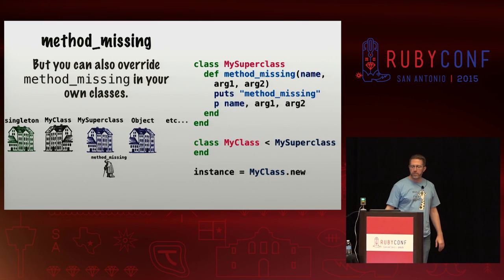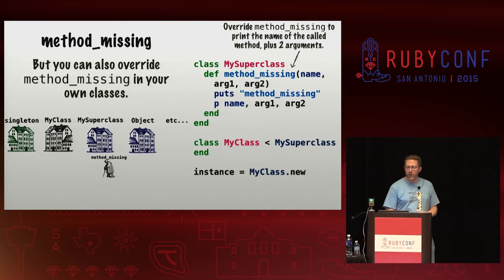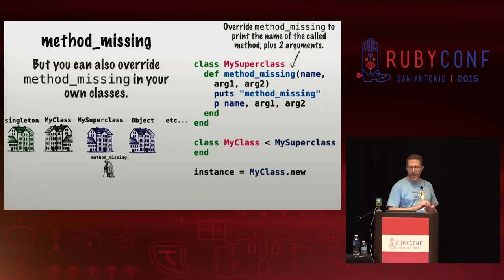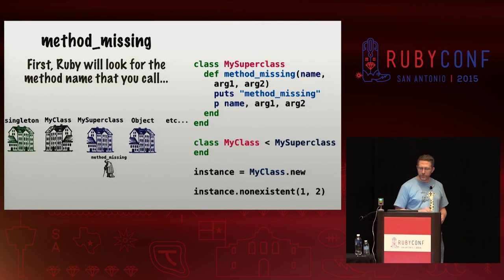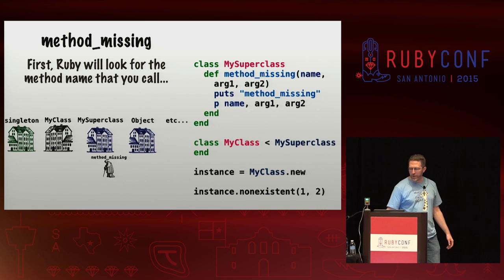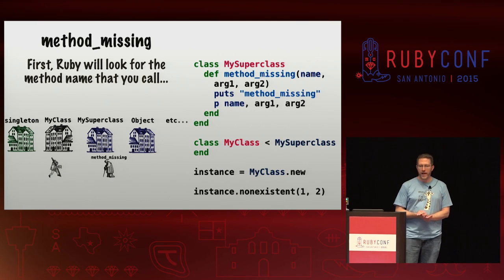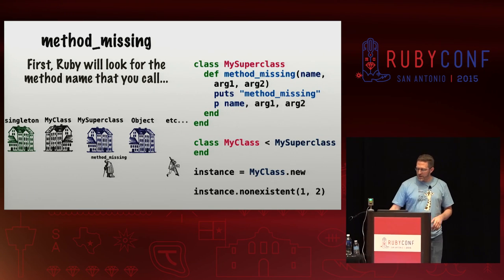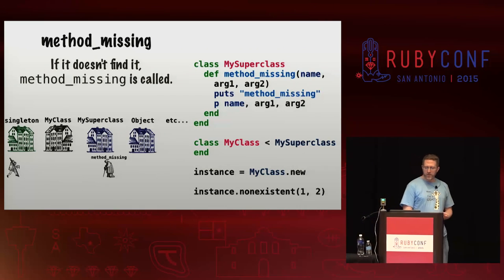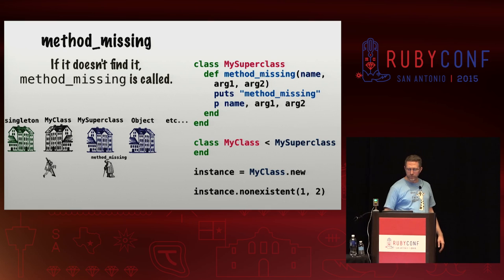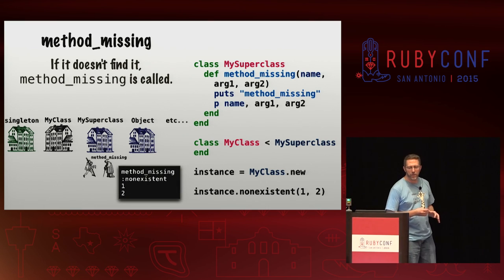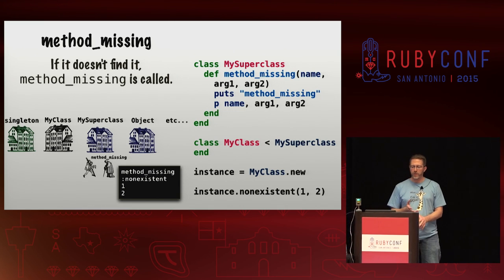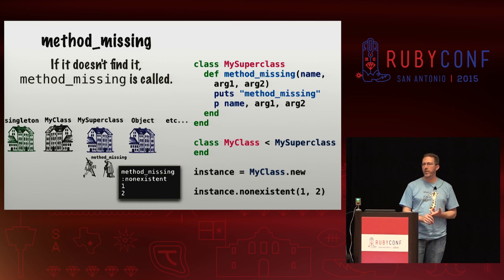But you can also override method_missing in your own classes. Up here on my super class, we override method_missing. We take three parameters: the name of the method that was invoked, and two arguments. First Ruby will look for the method name you actually called — that non-existent method — going right past the method_missing definition. If it doesn't discover it, it'll start back over at the singleton class looking for a method named method_missing. It'll find it on my super class and invoke it. Ruby passes the name of the method you attempted to call as the first argument, plus any arguments you called it with after that.